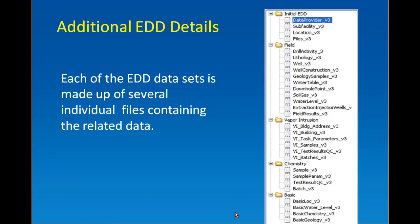Each data set is made up of several individual files containing all relevant data, including sample locations, sub-facility IDs, well construction information, water tables in the field, EDD set details, vapor intrusion, building information, chemistry, samples, and test results. The basic submittal has a basic form of each of those — basic location, basic chemistry, and geology.